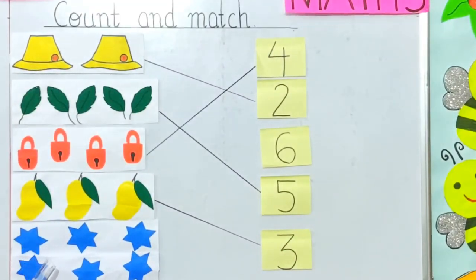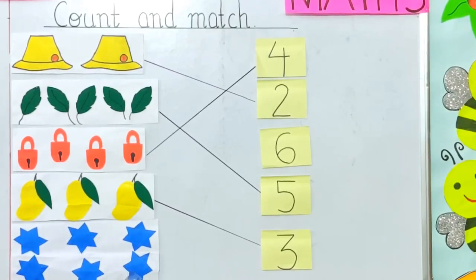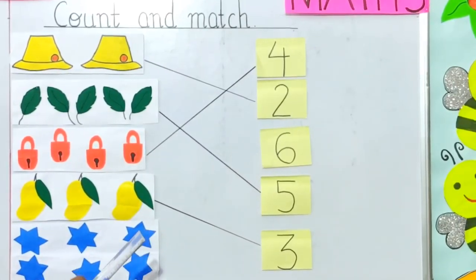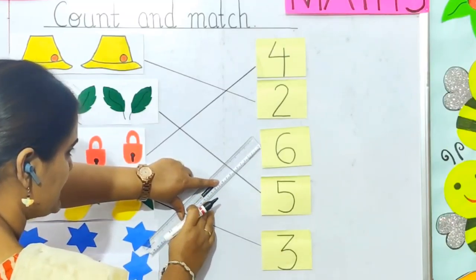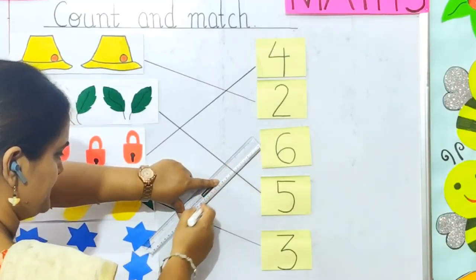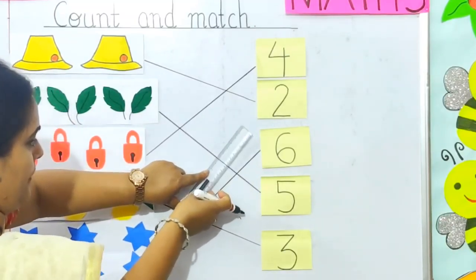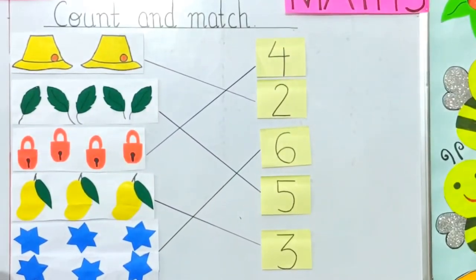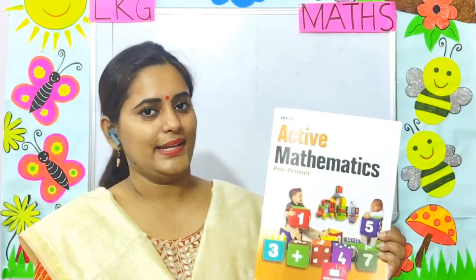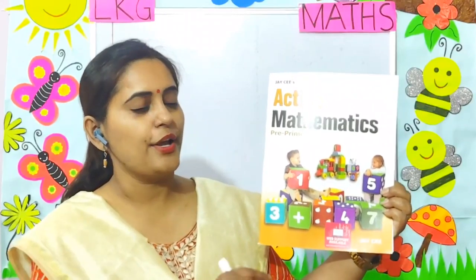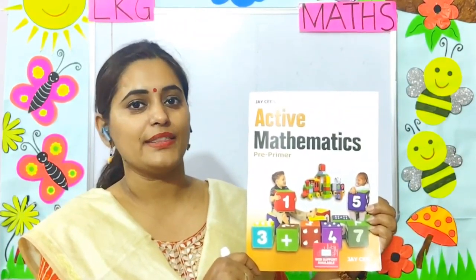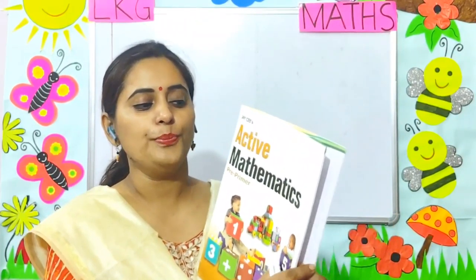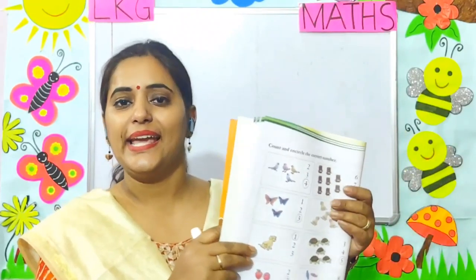How many stars are here? Let's count: 1, 2, 3, 4, 5, 6 stars. Where is 6 written? It is here. So let's match it with the number 6. Now children, let's learn from your active mathematics book — open to page number 48.